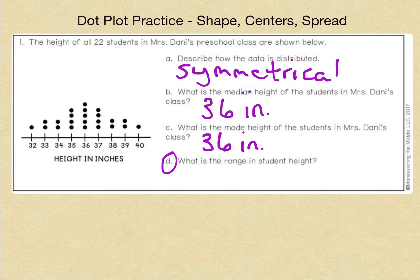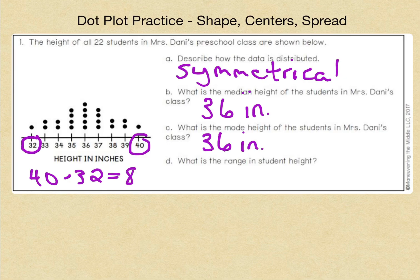Okay, now for our last question, D. What is the range in student height? Now, remember, for our range, we are going to compare our least amount and our greatest amount, our highest and our lowest. 40 minus 32 gives us 8. So our range is 8 inches.